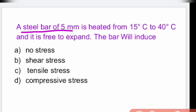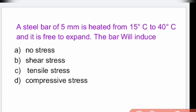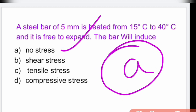A steel bar of 5 mm is heated from 15 degrees to 40 degrees and it is free to expand. When the bar is free to expand, there are no stresses developed in the bar — it is stress free. That is option A.